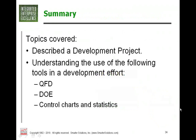Now we're at the summary. We described development projects — a new product, a new process, or a new IT project. Relative to tools, we got into quality function deployment, how you could apply design of experiments, and control charts and basic statistics — how we might be able to open people's eyes to some of the risks they are taking. That's about all I've got for today. Now let's look at questions.